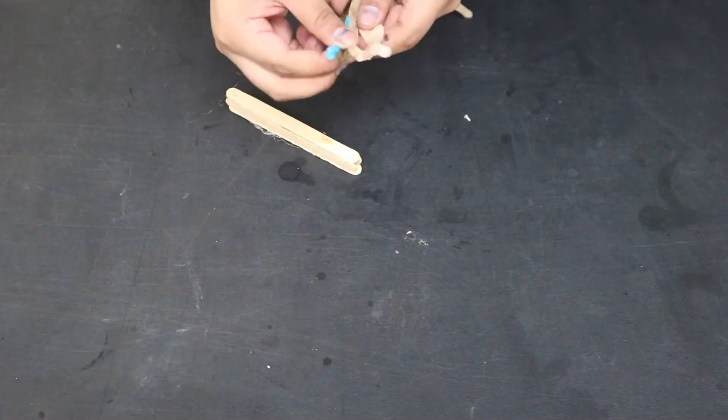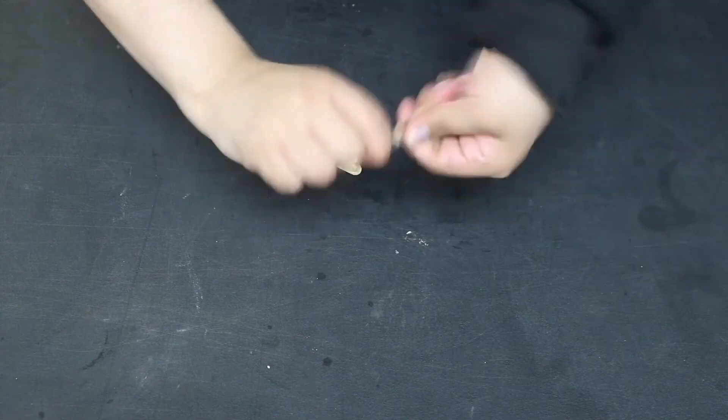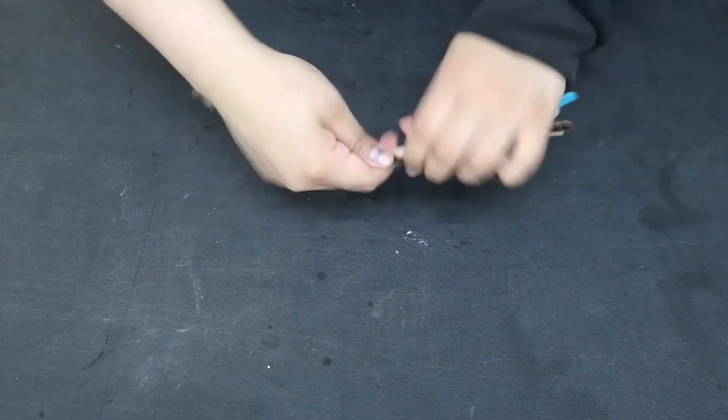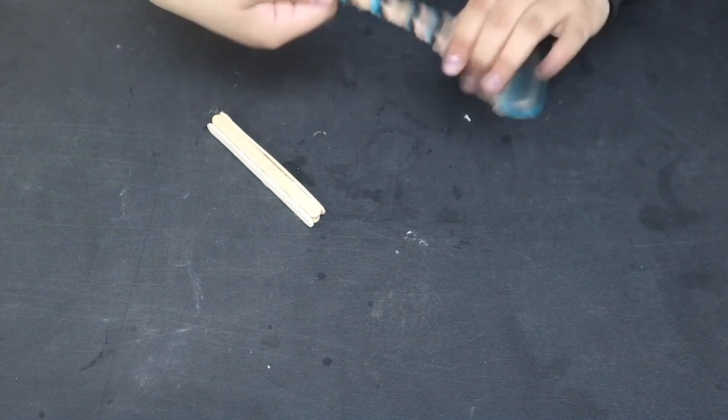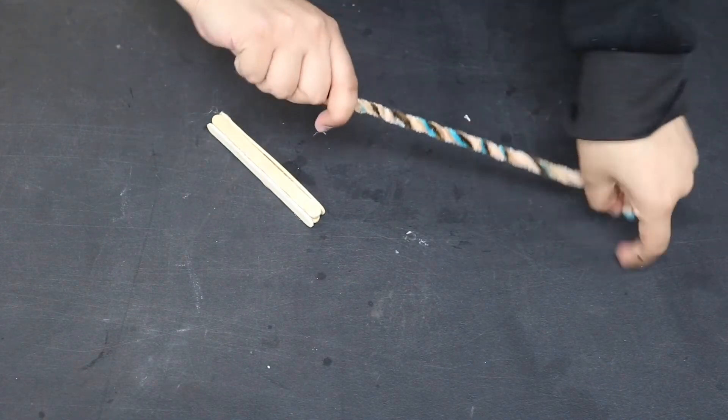Once I am done creating my box, I will take six pipe cleaners and twist them all together. Once I am done twisting, I will take my pipe cleaners and insert them in the little boxes that we have just created.